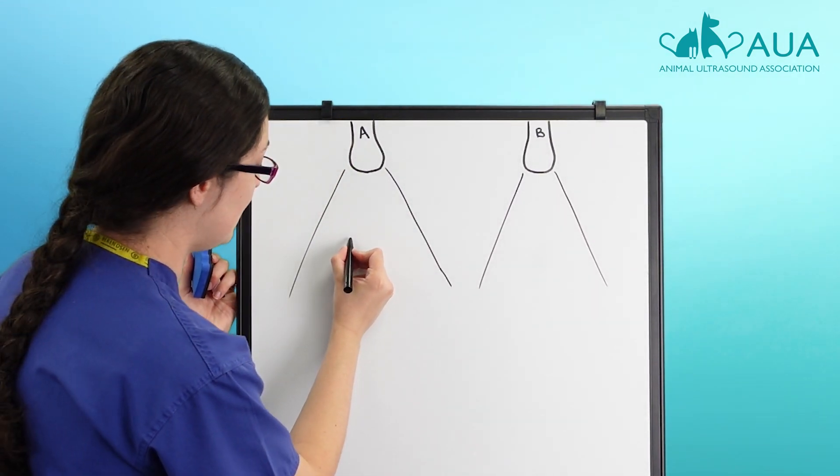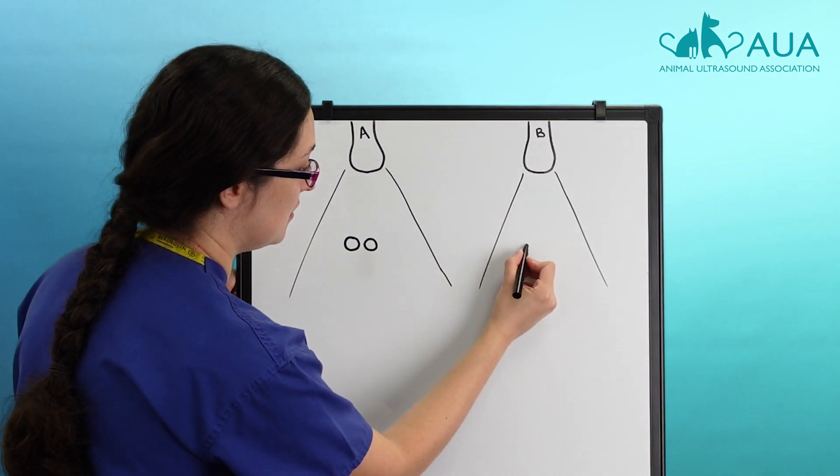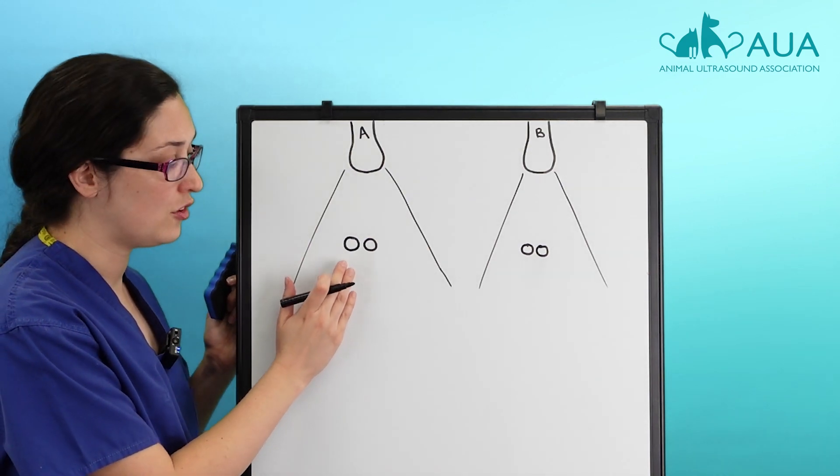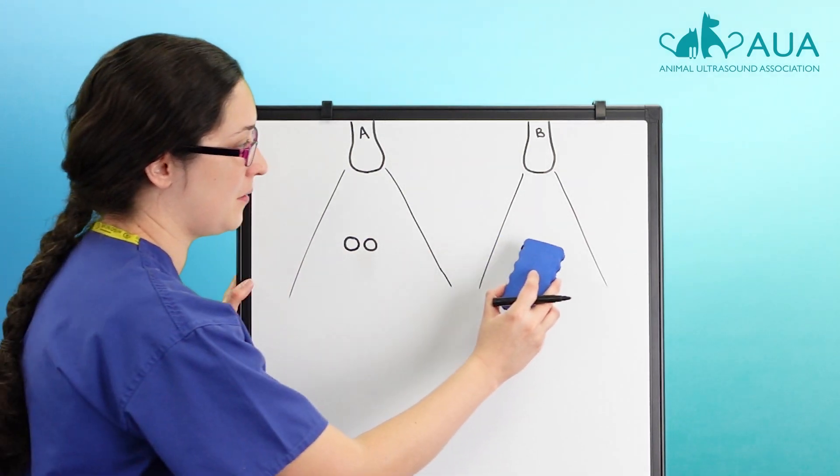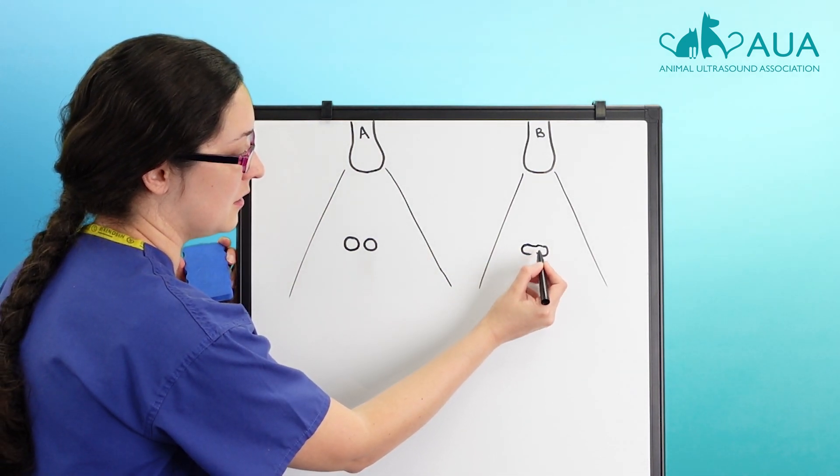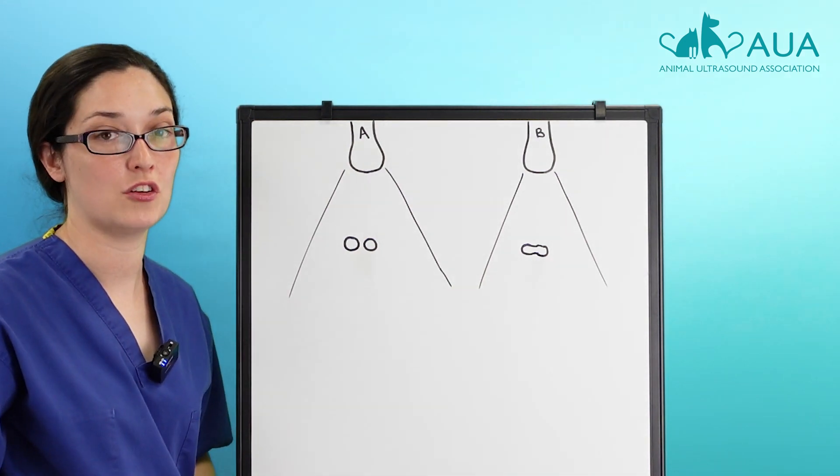Now lateral resolution is the exact same thing, but in the horizontal direction. So again, scanner A has good lateral resolution, these two points are shown as two points. Scanner B has poor lateral resolution, and so you see something like this on your scanner.